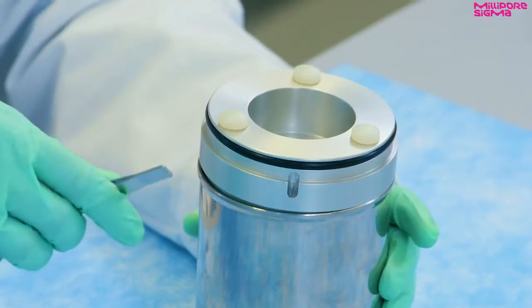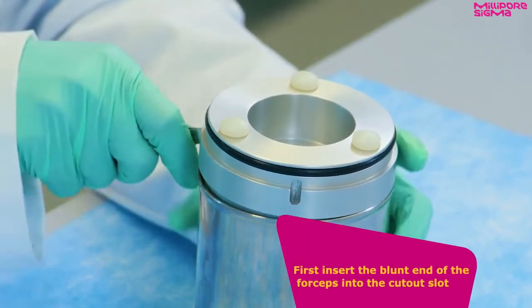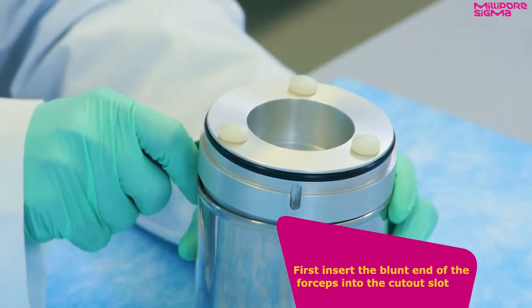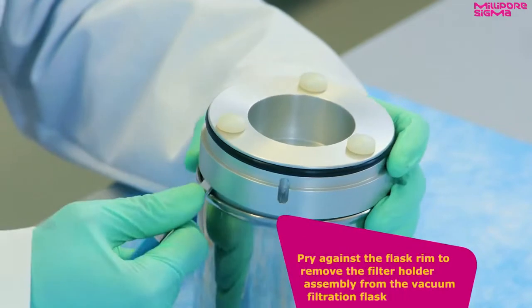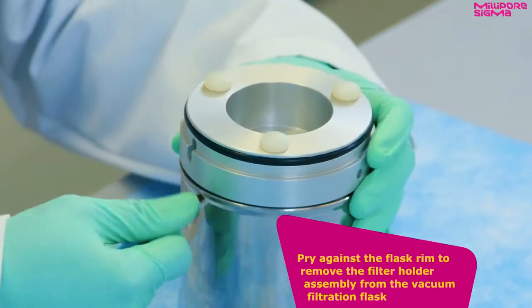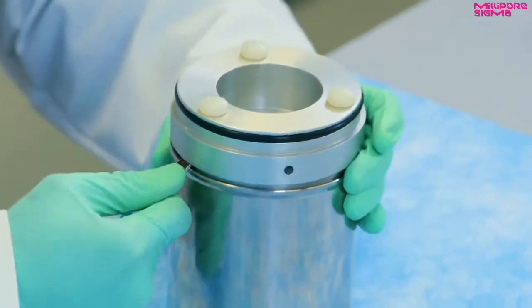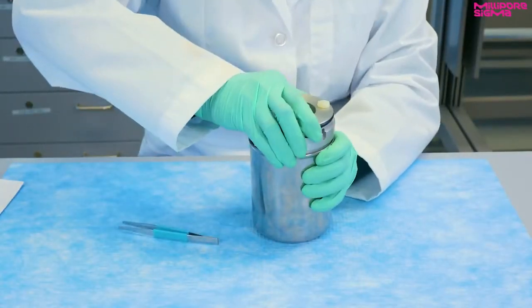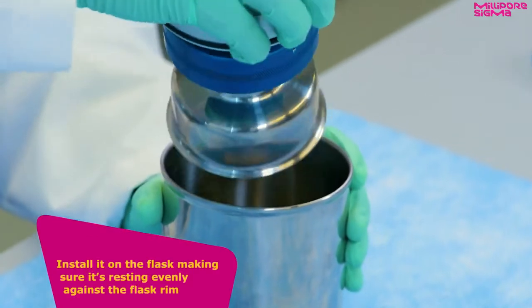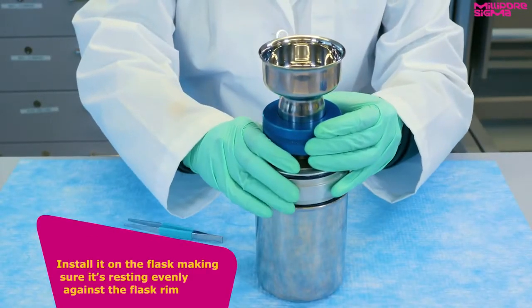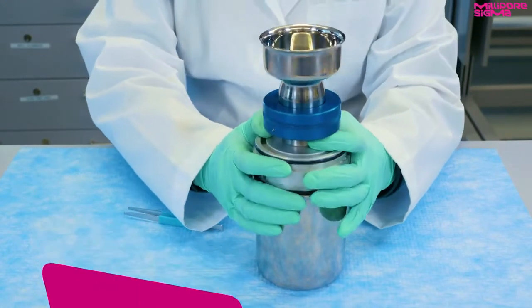To assemble the test filtration apparatus, first insert the blunt end of the forceps into the cutout slot and pry against the flask rim to remove the filter holder assembly from the vacuum filtration flask. Remove and invert the holder assembly and install it on the flask, making sure it's resting evenly against the flask rim.